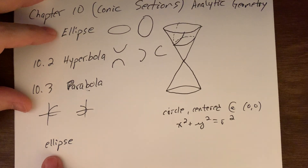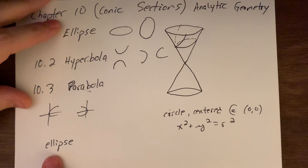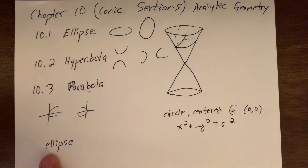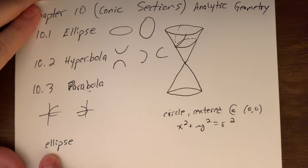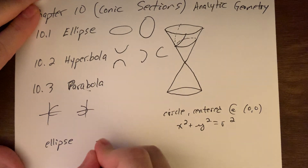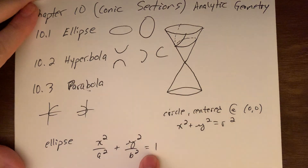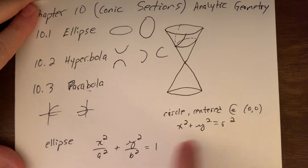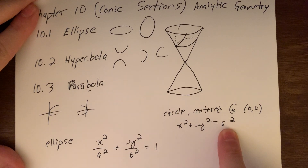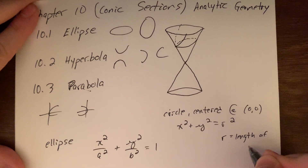When it comes to an ellipse, the A and B letters the book uses I find a bit frustrating because they keep flipping their purpose. So my notes will be slightly different than the book, but I'll explain exactly how this works. Our standard equation for an ellipse centered at the origin will be x²/a² + y²/b² = 1.